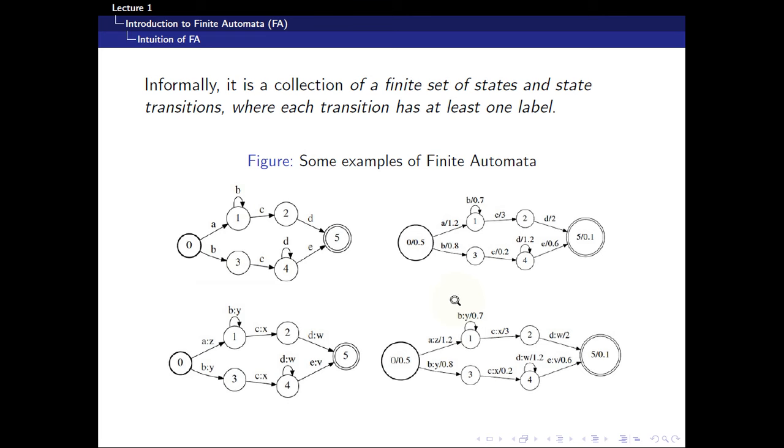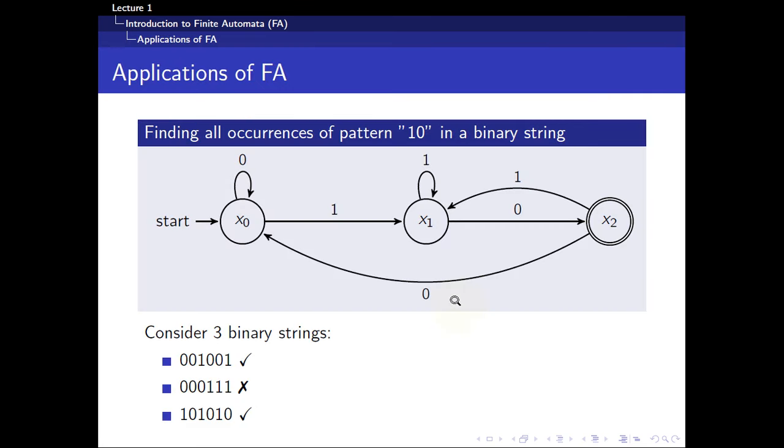Before we get too deep into it, we have to ask ourselves what are some of the uses of a finite automaton. A straightforward example would be something known as subsequence detection. Suppose we are given a binary string and we are tasked to find if there's a subsequence of one-zero occurring in the binary string. This particular finite automaton will allow us to tackle the problem.